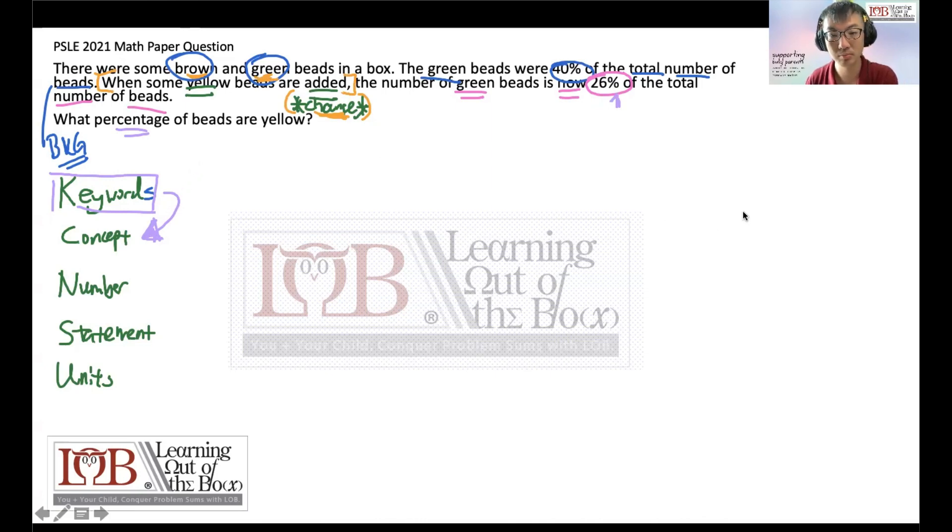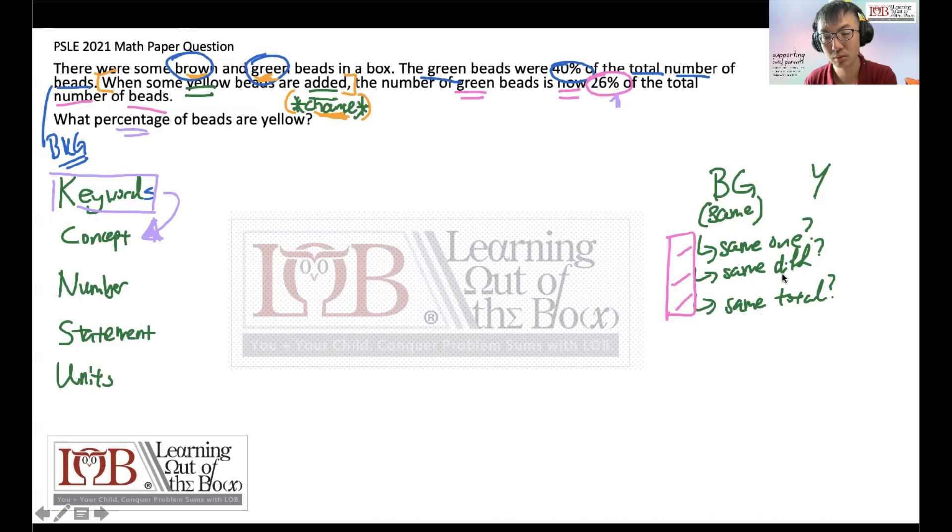What we can do is we just look at brown and green, and then next we add yellow, which means that brown and green stays the same. Let me give you a clue. Give you three choices. There are three same concepts: one is same one, one is same difference, and one is same total. Which concept does this fall under? If you ask your child and your child is giving you that kind of blank stare, you know that you need help to tackle this, to at least be aware that there are concepts.